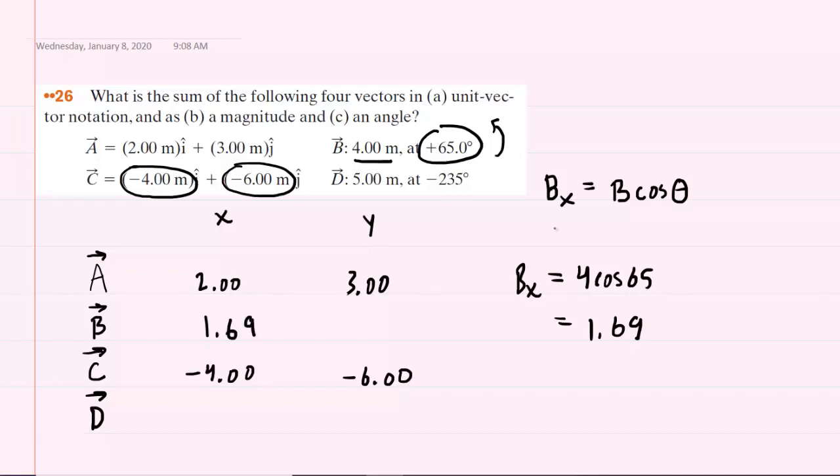Now, as for the Y component, we recall that that would be the magnitude of the vector B multiplied by the sine of the angle. So it's very similar. We'll take the magnitude of four, but this time we'll multiply by the sine of 65 degrees. And when you do that, you should get about 3.63. So there will be the Y component of vector B.